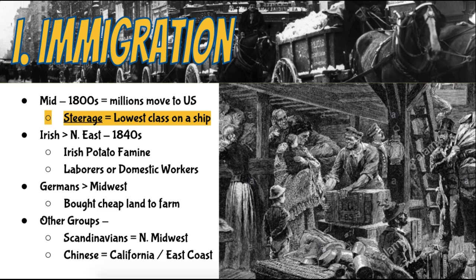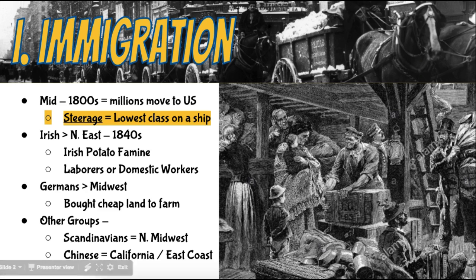Probably the largest group of all immigrants were the Scandinavians, and they tended to head for the northern midwest. The Chinese, who immigrated across the Pacific, went to California.